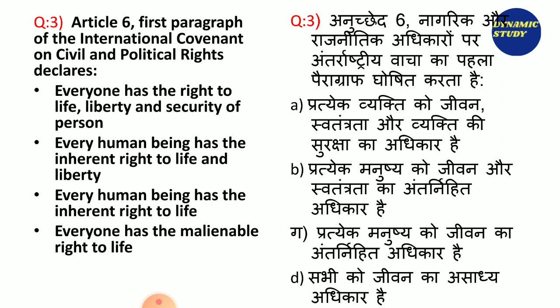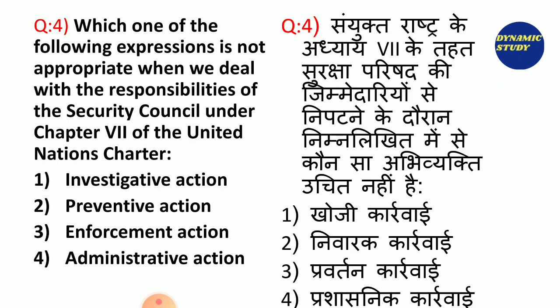Article 6 ka jo first paragraph hai, wo kya declare karta hai International Covenant on Civil and Political Rights ka? And the answer is third: every human being has the inherent right to life. This is humare Constitution of India mein right to life hai, wo aise hai.